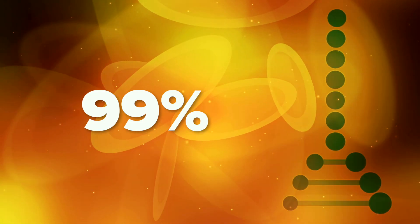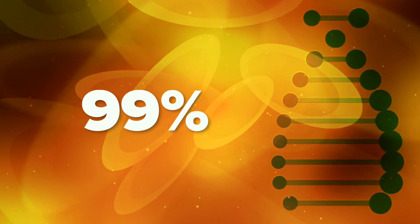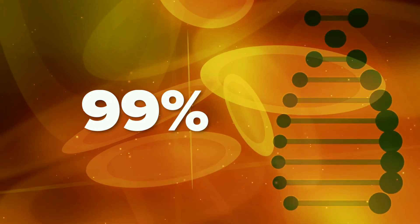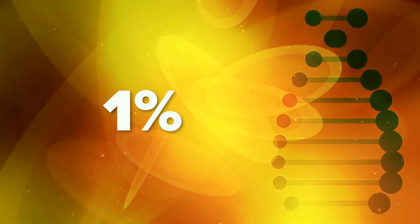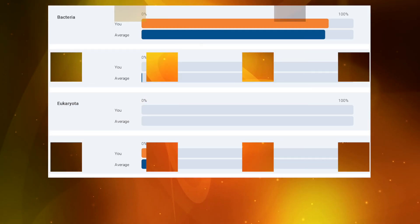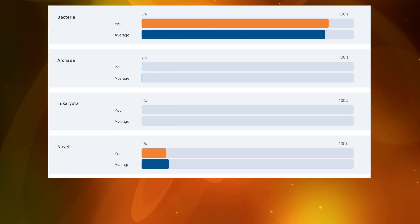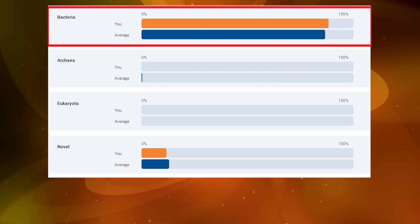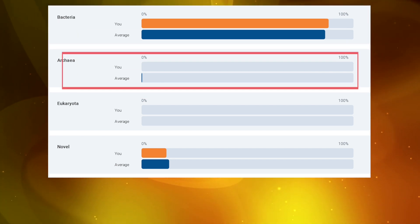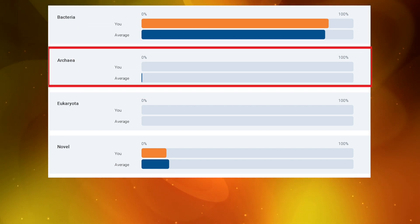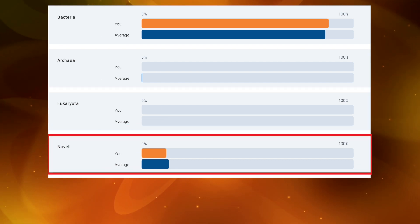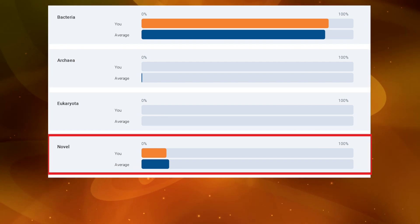Around 99% of the DNA in your stool is from microorganisms and only around 1% is from you. The microorganisms in your gut fall into four main groups: bacteria, archaea, eukaryota, and novel or unidentifiable DNA.